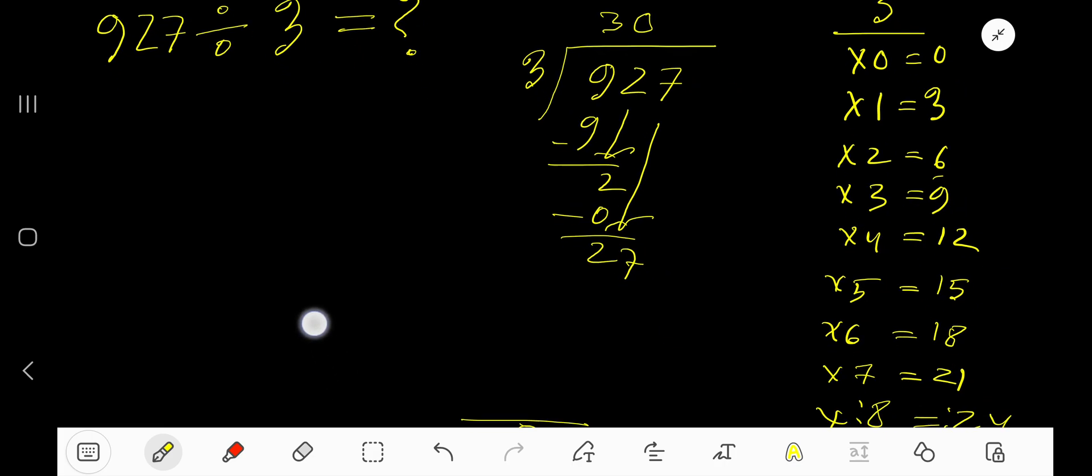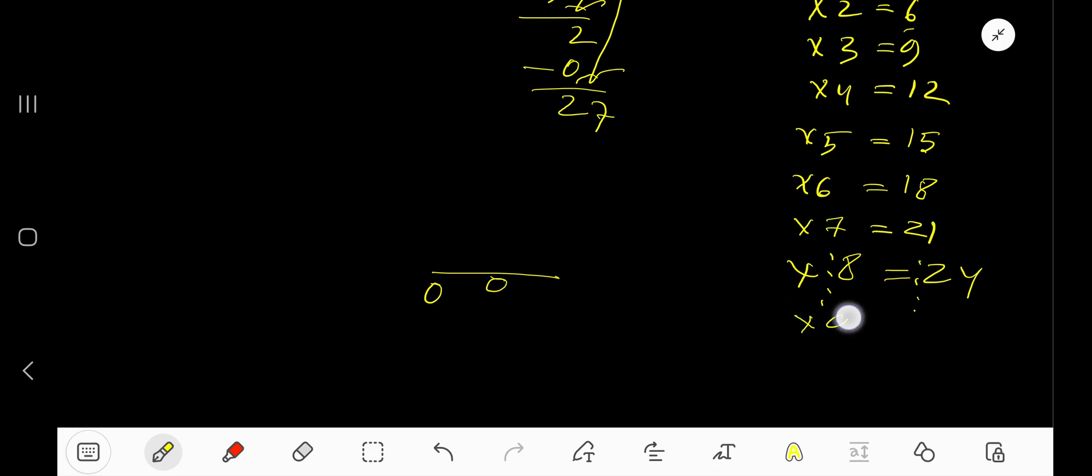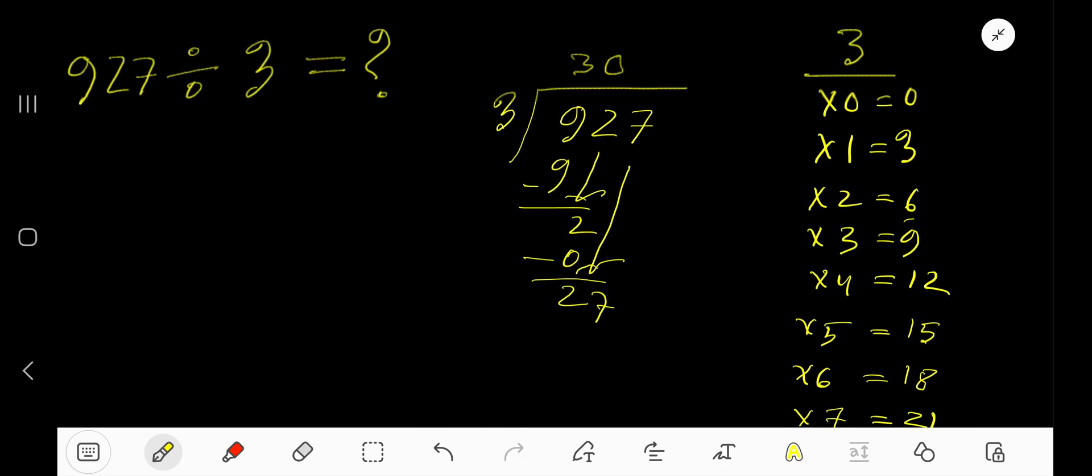3 goes into 27 how many times? 3 times 8 is 24, 3 times 9, just add 3, is 27.